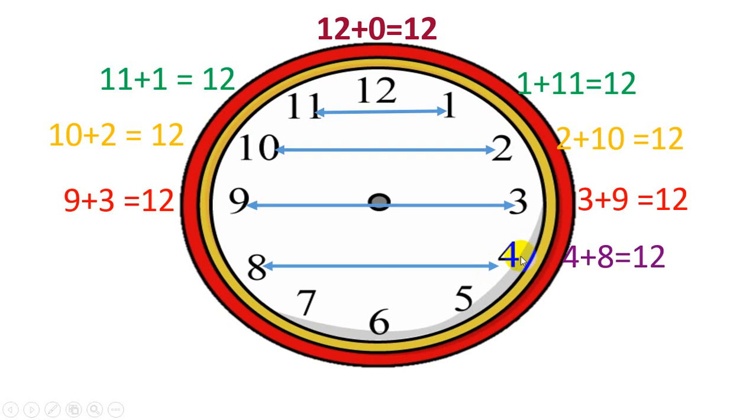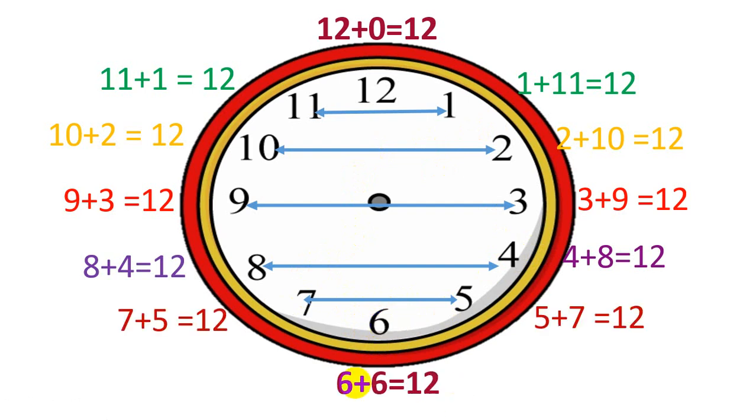Using the clock, it will make it very easy to find the number pairs for 12. Now as you can see that 6 is left alone, so I am going to add 6 and 6 to get 12. So this is how we are going to find the number pairs for 12.